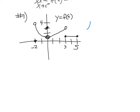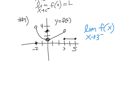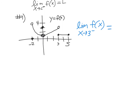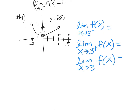We're going to find the limit of f(x) as x goes to 3 from the left (3 minus), the limit as x goes to 3 from the right (3 plus), and the limit as x goes to 3. Here's x equals 3 on the graph. This is the left side — 3 minus — and this is the right side — 3 plus.